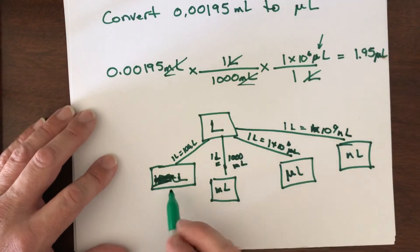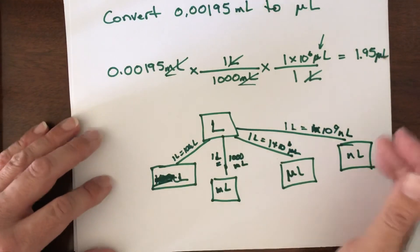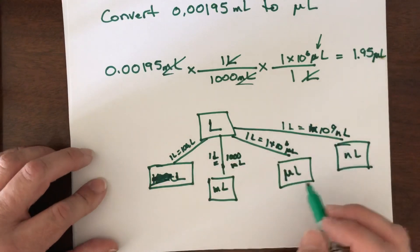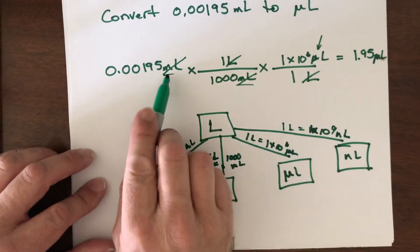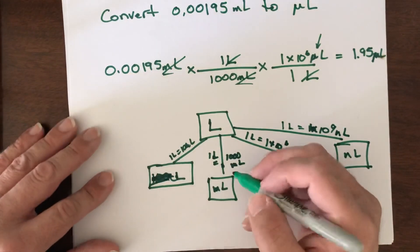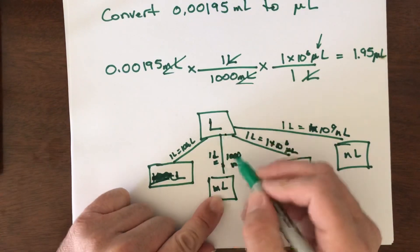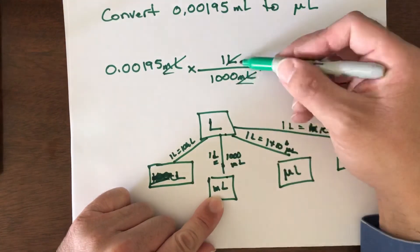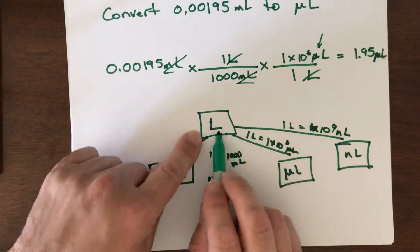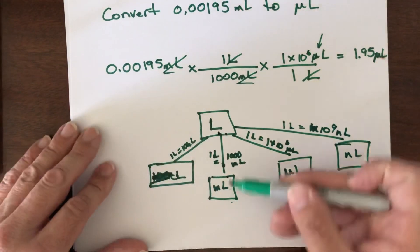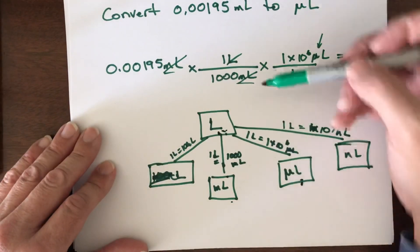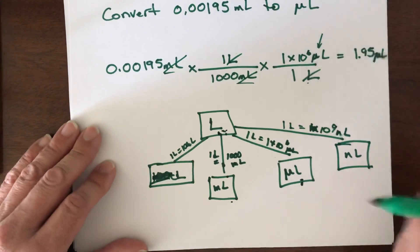And so this just gives us a roadmap for getting back and forth through all of our units. I'm connecting them all back to the base unit here just as I did in this problem. If we think of this in terms of the map, we went from milliliters to liters using the one liter is a thousand milliliters conversion, and then from liters we went to microliters.